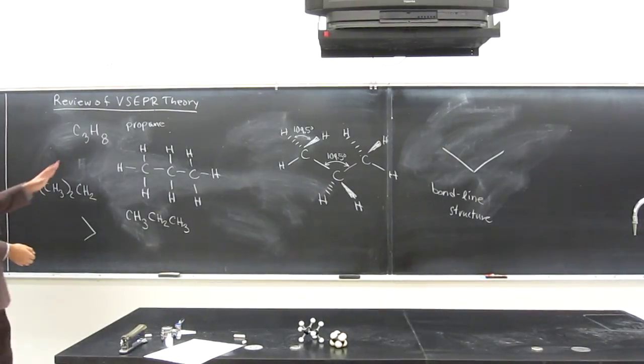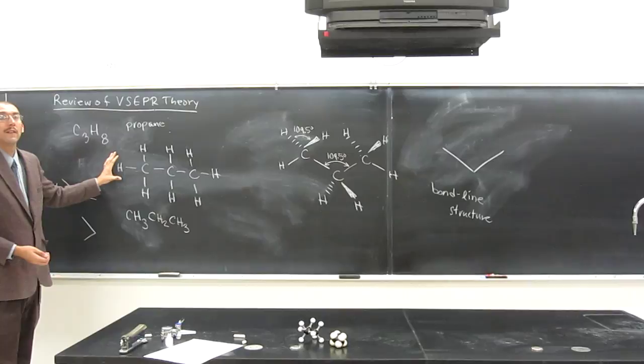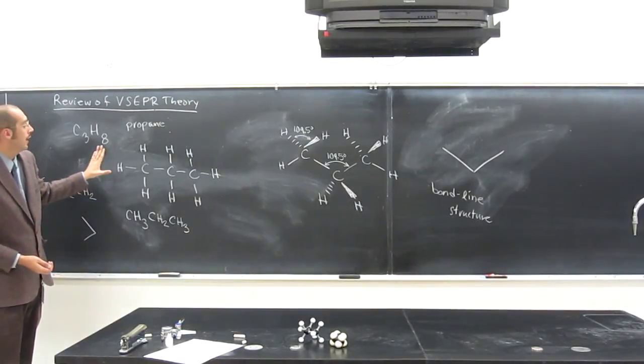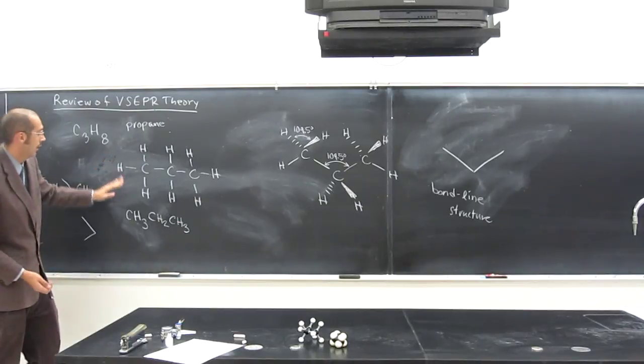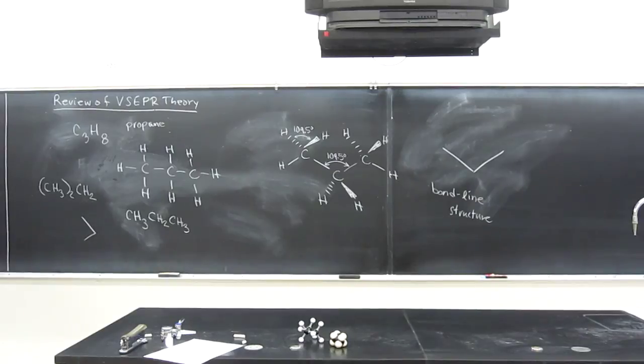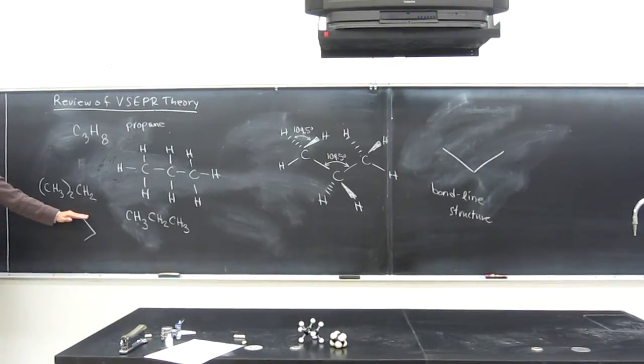But it starts to get confusing, especially for an introductory chemistry student. If I'm an introductory chemistry student, and I say, if somebody tells me draw the condensed formula, I just draw this Lewis structure first, and then just one down, one down, one down. You can do this. Again, it's not wrong. But once you start to do this with bigger structures, it will become wrong, and I'll show you.